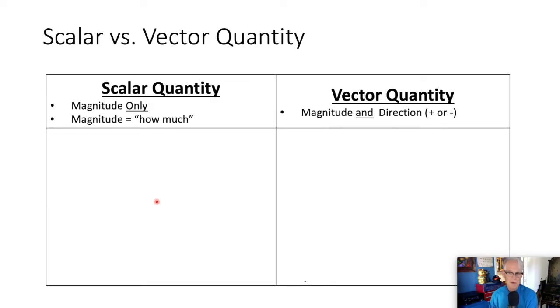A quantity is something that we measure. There are two types of quantities, scalars and vector quantities. A scalar quantity only tells us about the magnitude, or how much.